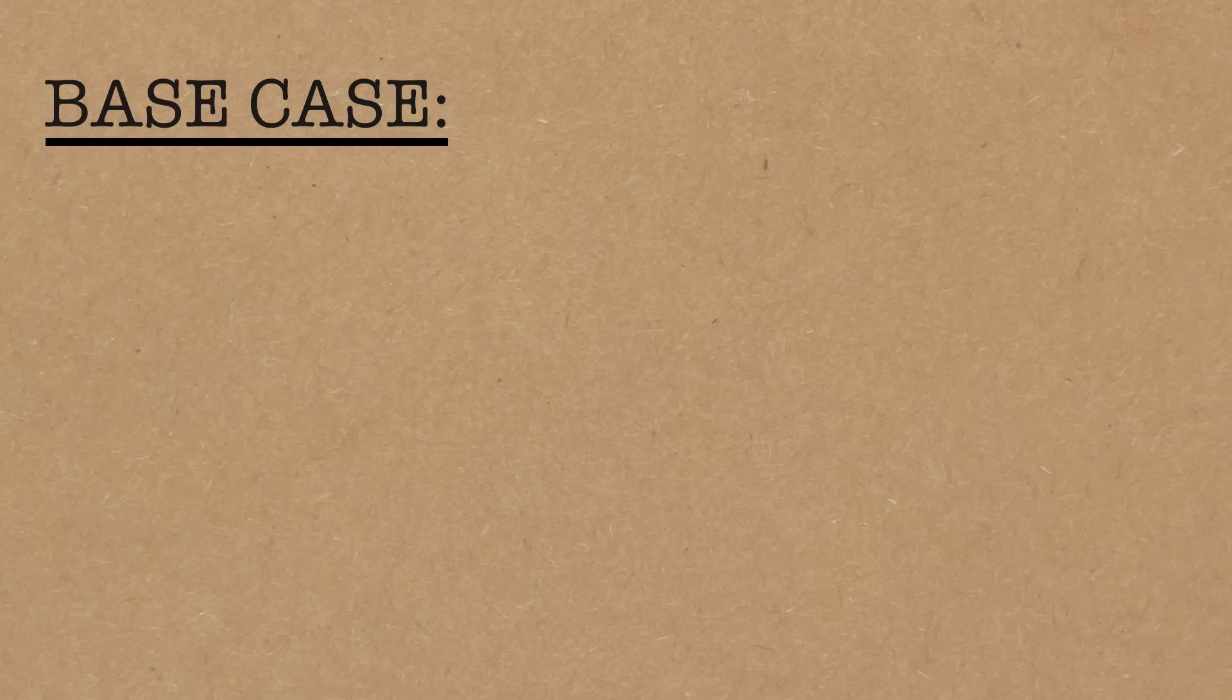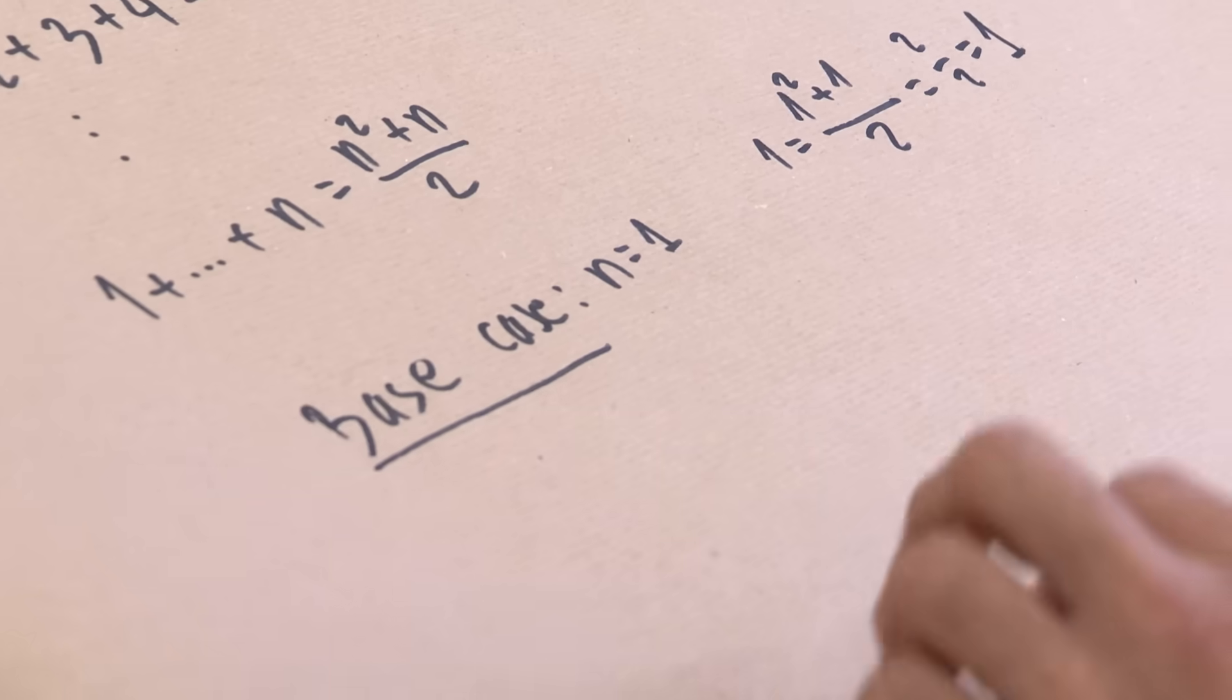I'm going to say, base case, the induction base, we prove this for n equals 1. So for n equals 1, I'm just going to verify by hand. We have 1 is 1 squared plus 1 divided by 2, that's 2 divided by 2, that's 1. We already had this discussion over there.